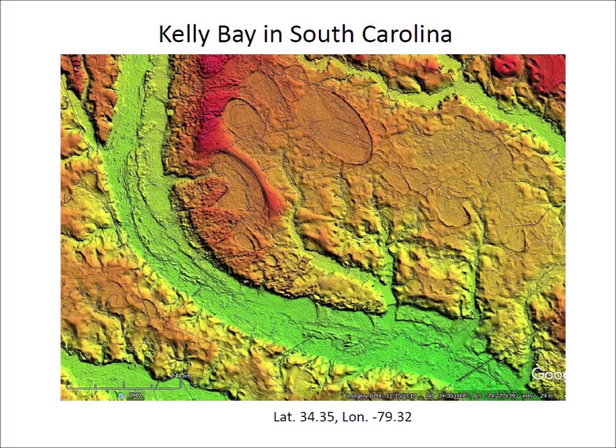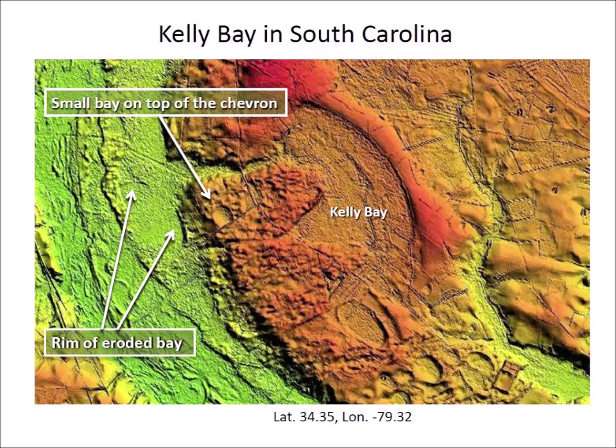Kelly Bay in South Carolina clearly demonstrates the geological principle of superposition. This detailed image shows that Kelly Bay was created first and then the chevron dunes were deposited on top of the bay. The dunes were created from splashes of impacts in the riverbed during the ballistic ice bombardment. A few minutes later, the upper chevron was hit by a small ice projectile with a higher trajectory that made a small bay on top of the chevron. The stream bed still retains the faint rim of an eroded bay. All the bays and the chevrons were created within a few minutes during a horrific hailstorm of glacier ice ejected by the extraterrestrial impact on the Laurentide Ice Sheet.